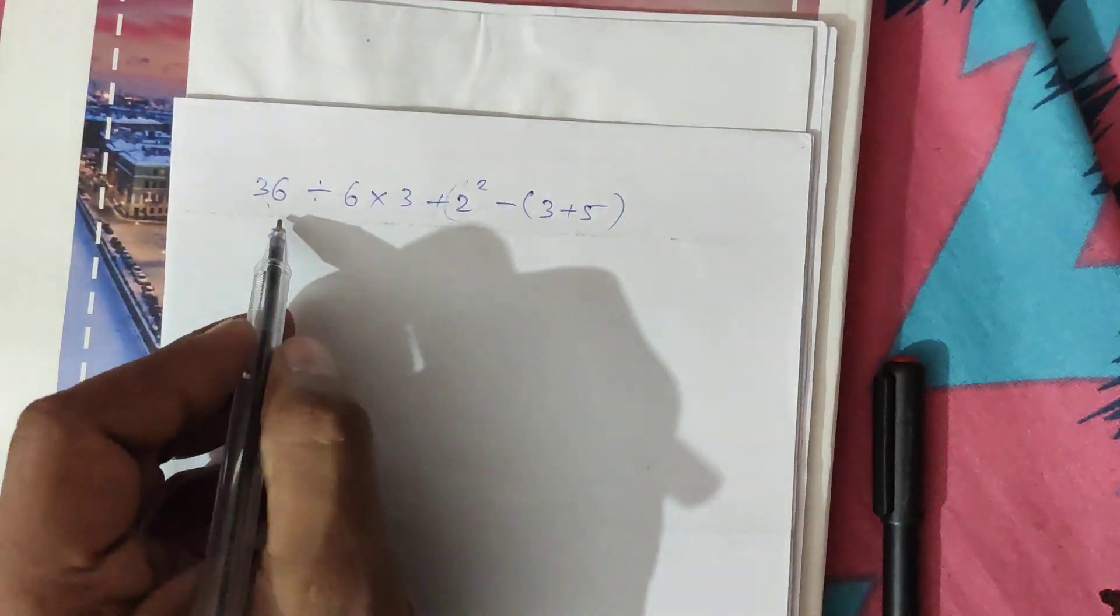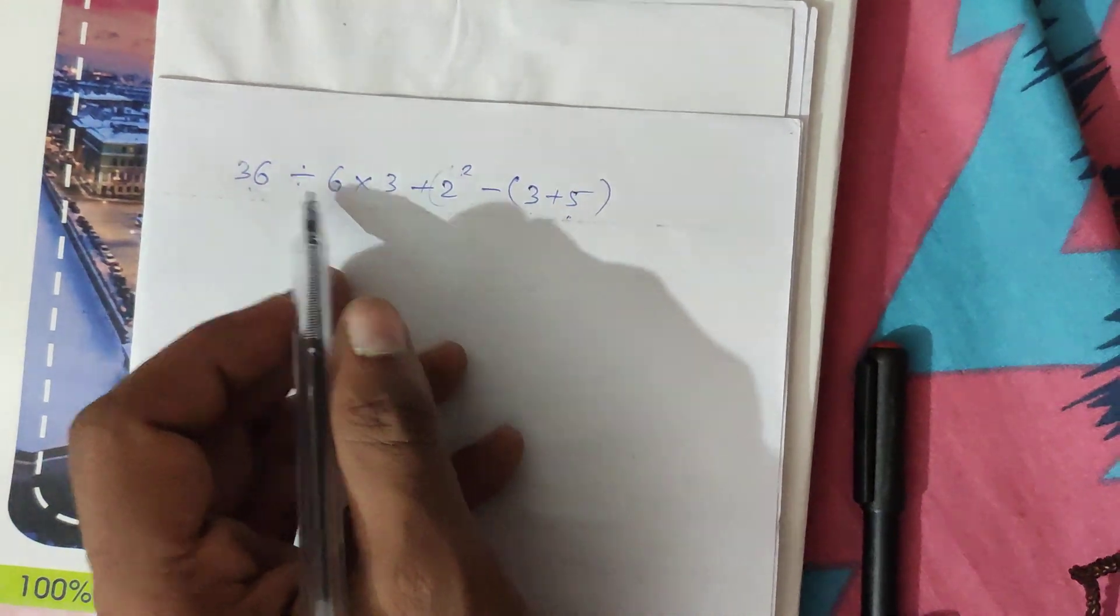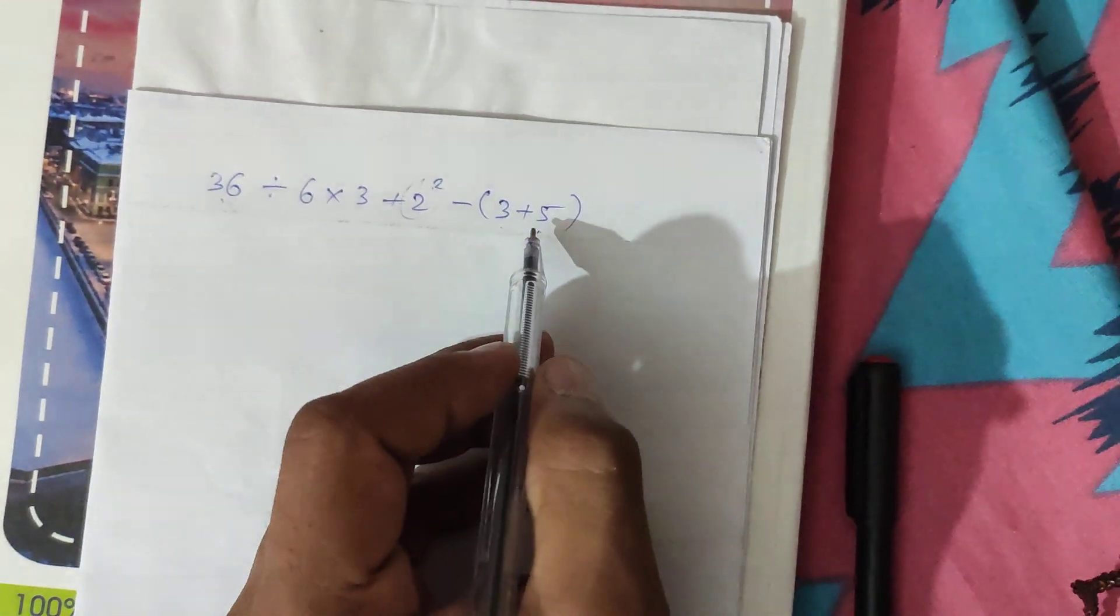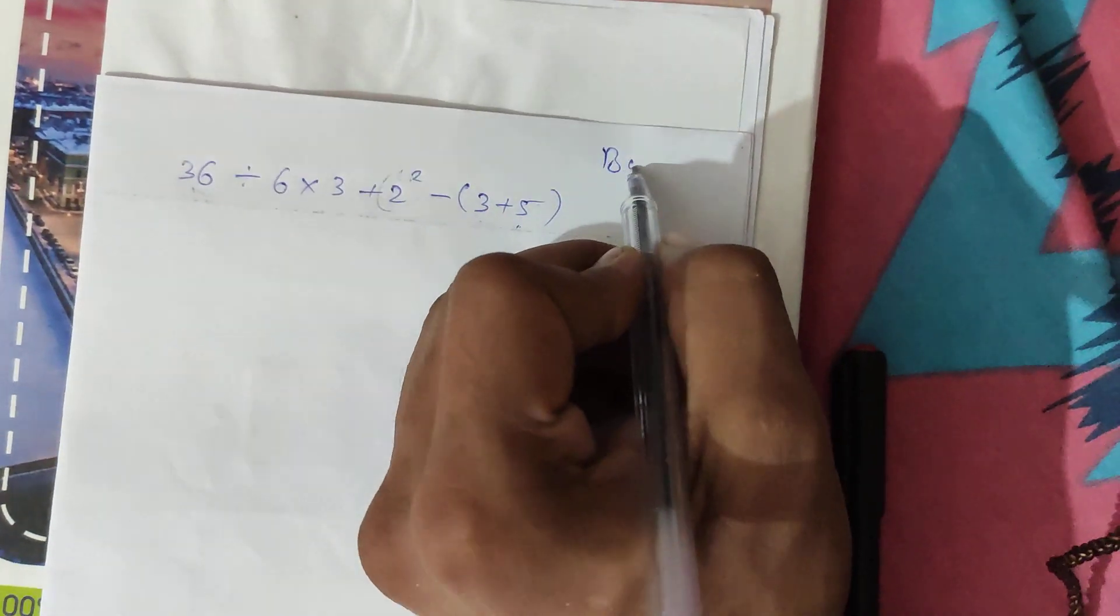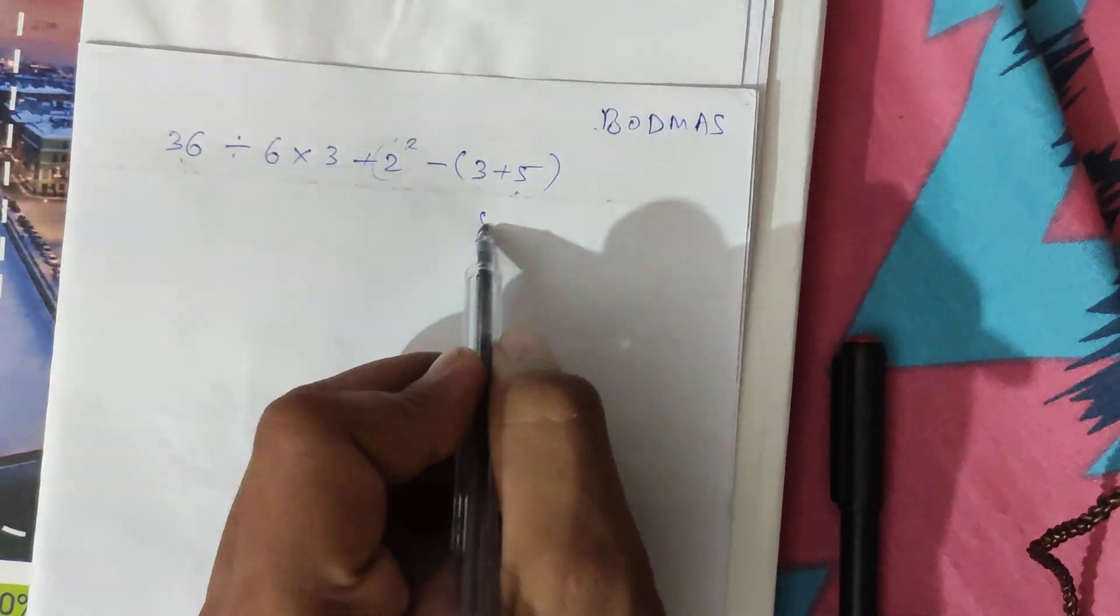Now let's solve an example. We have a parenthesis, the order of exponent, the multiplication and division. So first, by the BODMAS rule, we take the bracket first, so it becomes 8.